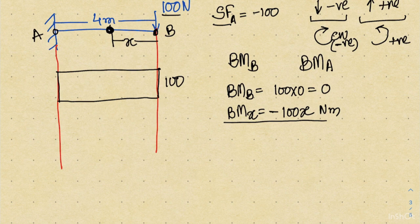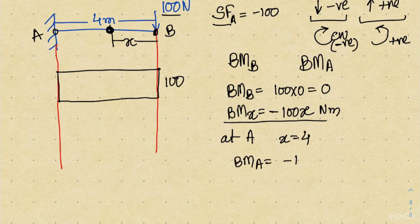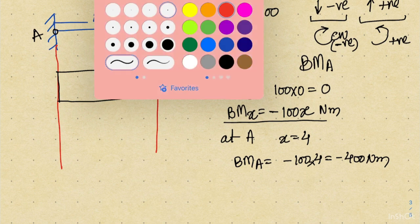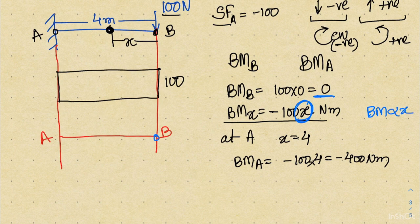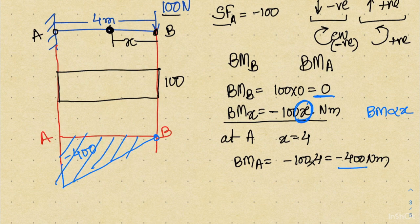This equation is valid from point B to point A. At point A, x becomes 4, so the bending moment at A equals minus 100 into 4, which is minus 400 Newton-meter. To draw the diagram: starting from point B where the bending moment is zero, it increases linearly because the equation is proportional to x. When we reach point A the bending moment is minus 400 Newton-meter, giving a straight line on the diagram.